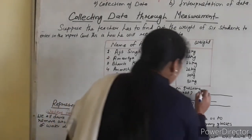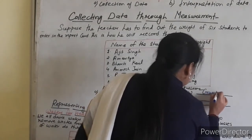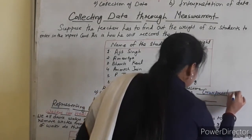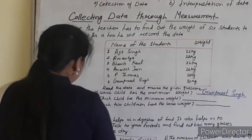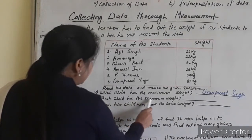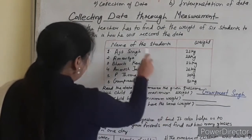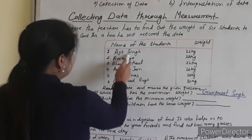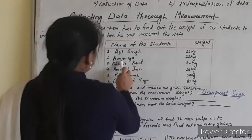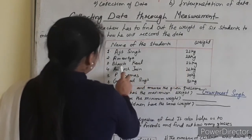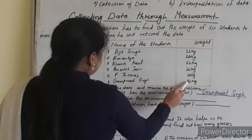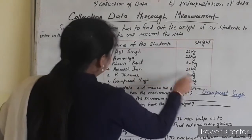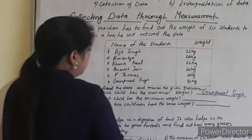So write here: Burkitz Singh. Then the next question: which child has the minimum weight? Looking at the data — Ajit Singh has 21 kg, Amatya has 22 kg, Bharti Kaur has 22 kg, Anina Zen is 26 kg, Thomas is 29 kg, Bharti Singh is 32 kg. So Ajit Singh has the minimum weight.